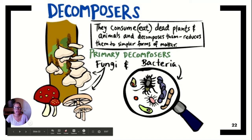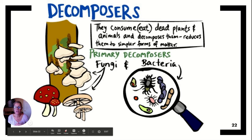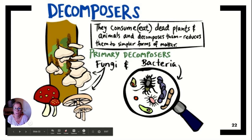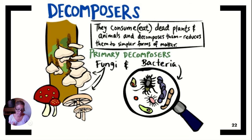Let's talk about decomposers. Decomposers consume dead things — sometimes they can be parasitic, like if you've ever had athlete's foot, that's a fungus eating part of your foot. But for the most part, they break down dead plants and materials, returning those nutrients back to the soil. So on your notes: fungi and bacteria break down dead organic material, and they use enzymes to do that.